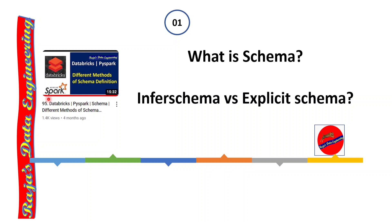Coming to infer schema, whenever we are reading data from big data file formats such as CSV, JSON, or Parquet, we can explicitly specify the schema or we can ask the Spark engine to infer the schema. Infer schema means Spark engine will scan the entire data, then come to a conclusion of an automated schema. But that is not recommended because infer schema creates a negative impact on performance, so it is always better to avoid it.